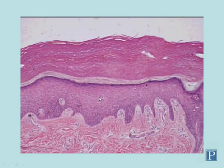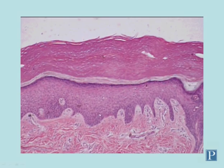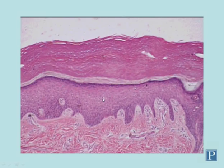Superficial to the stratum basale is the stratum spinosum. It gets its name because in some H&E stained sections you can see intermediate filaments — tonofilaments — attached to desmosomes. Much of the cell tends to shrink back, causing the intermediate filaments to stick out, giving a spiny appearance. You may or may not be able to see the spines on your slide — you'll need high magnification. The stratum spinosum is relatively thick, typically thicker than the stratum basale.